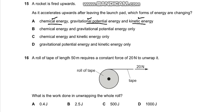Part B chemical energy, gravitational potential energy. In part C it's chemical, kinetic. In part D it's gravitational potential and kinetic. So considering all powers, A seems to be the correct option.